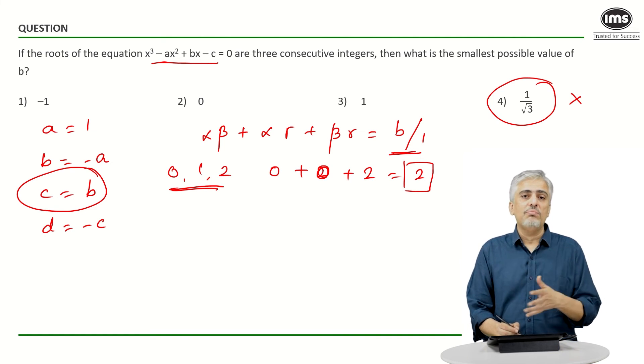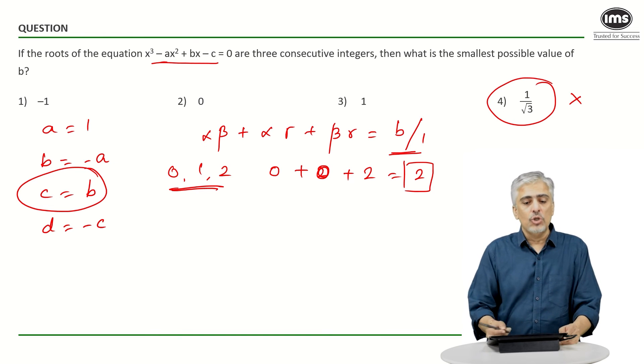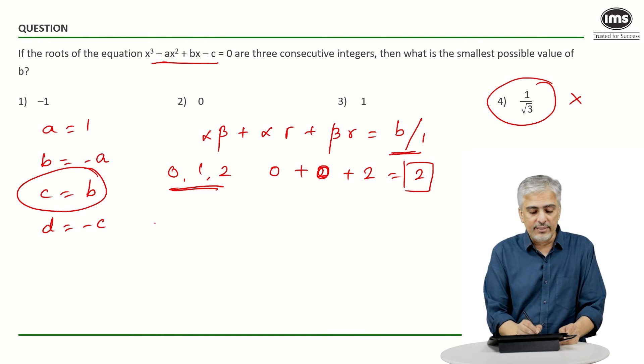Which means it got me thinking: should I take all negative? But I realize if I take all three negative also, or I take 0, -1, -2, I will land up to the same thing. So the way it can be done - the roots had to be -1, 0, and 1.